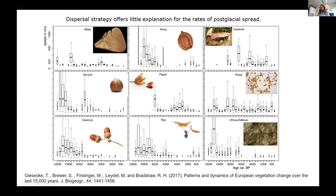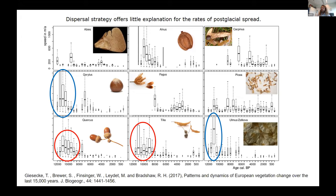This publication with box plots shows that we find taxa with very similar patterns in terms of early Holocene spread — for example, Corylus and Ulmus, which ran all over Europe in the early Holocene but have completely different dispersal modes: one has a heavy nut and the other a very light winged seed. The same thing we can see for Quercus and Tilia — similar early Holocene spread patterns but different dispersal units — and even for the late arrivals Fagus and Carpinus, similar trends but different dispersal modes.